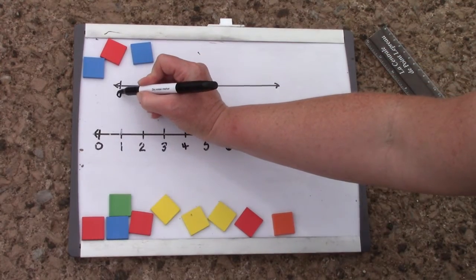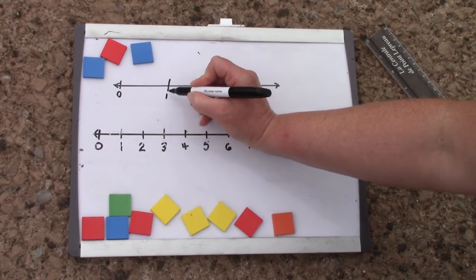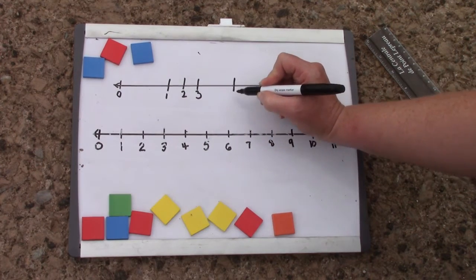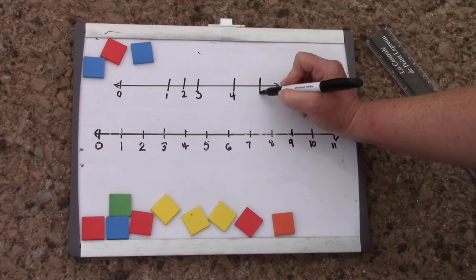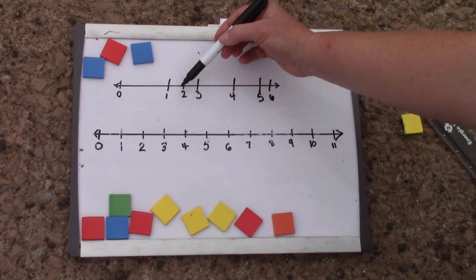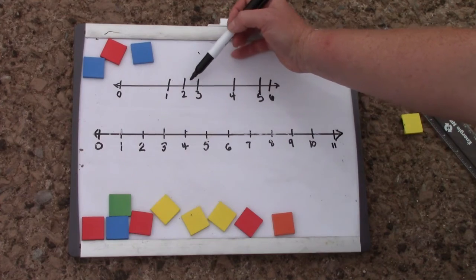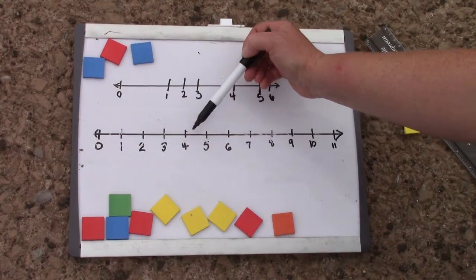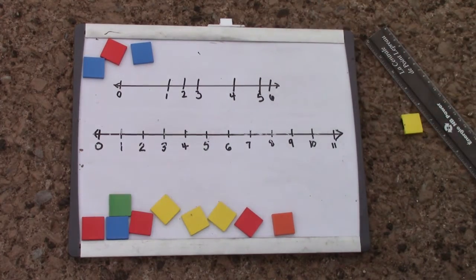It starts with zero and then maybe we have one, two, three, four, five, six. That looks so silly because all of the spaces are different lengths. We want ours to be consistent. Give it a try.